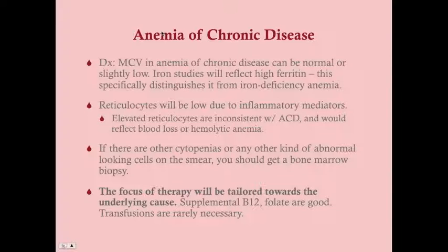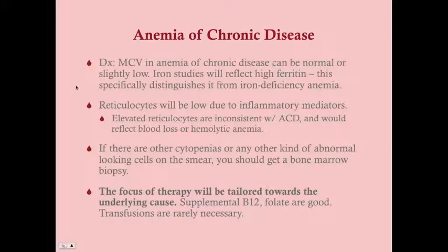For diagnosis: MCV is generally normal or slightly low. A low MCV does not automatically mean iron deficiency anemia — always rule out anemia of chronic disease. Anemia of chronic disease is the most common cause of normocytic anemia; other causes include blood loss, hemolytic anemias, and rarely pure red cell aplasia. Iron studies will show high ferritin, distinguishing it from iron deficiency anemia.